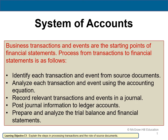System of accounts — building on what we learned in chapter 1: business transactions and events are the starting points for financial statements. From chapter 1 we talked about identifying each transaction. For example, Apple sells an iPhone. Anytime a company provides a good or service that's a transaction. Anytime a company receives a good or service — like General Motors buying tires from Michelin — that's a transaction as well. That's the first step in any accounting exercise: identifying the transactions.